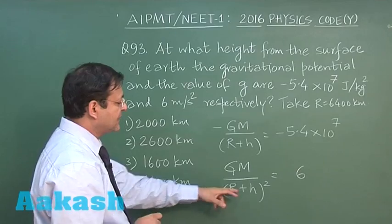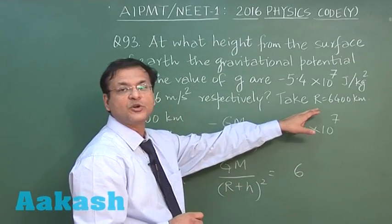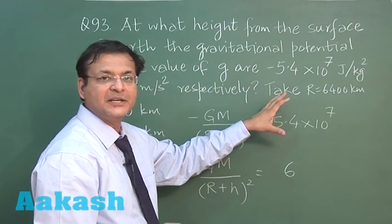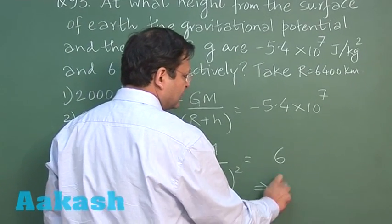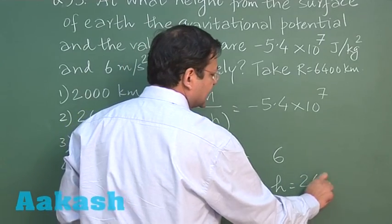If you divide it then you will be getting this value of h. The value of r has already been given in the question, that is 6400 kilometer, so dividing will give you the value of h as 2600 kilometer.